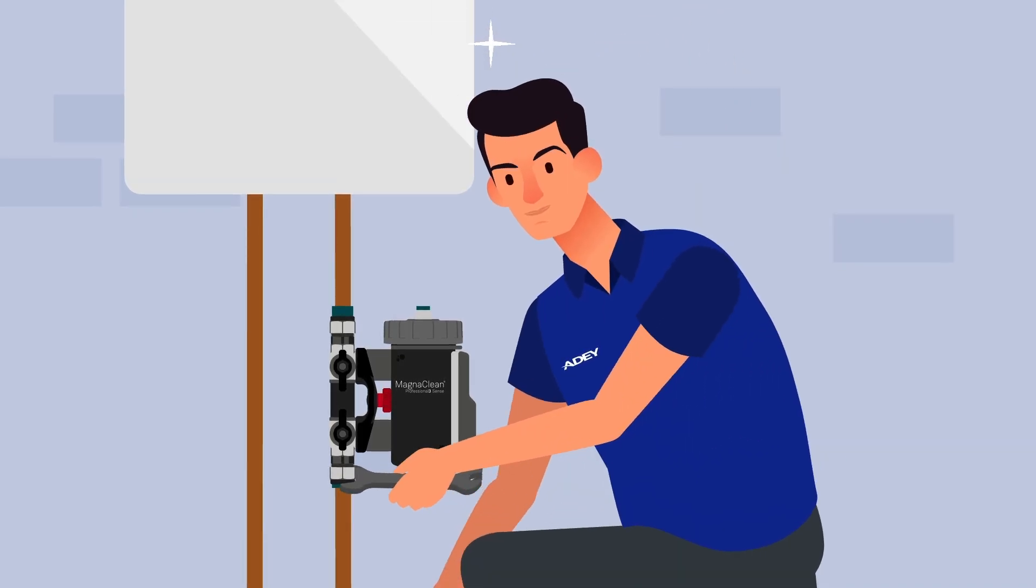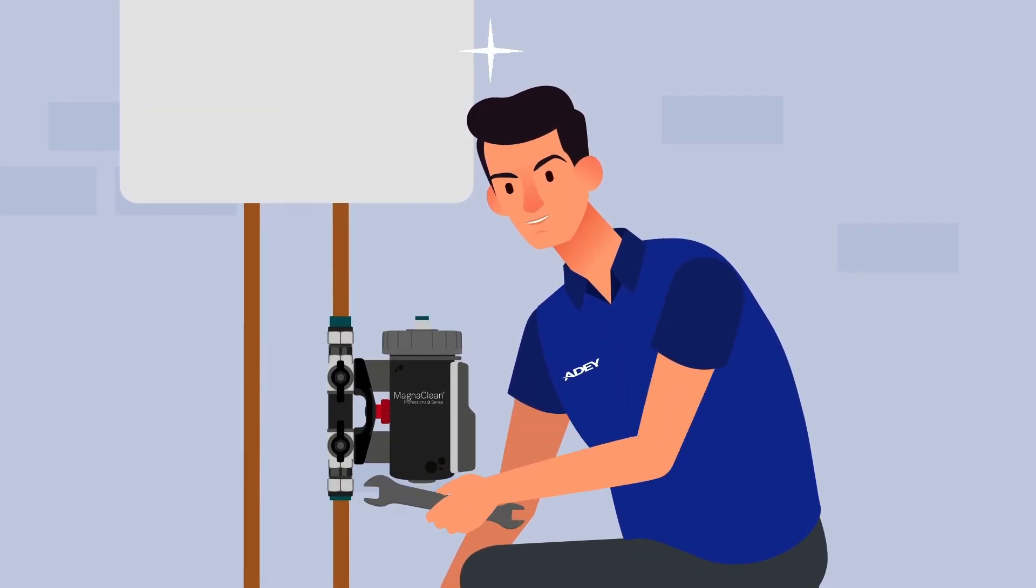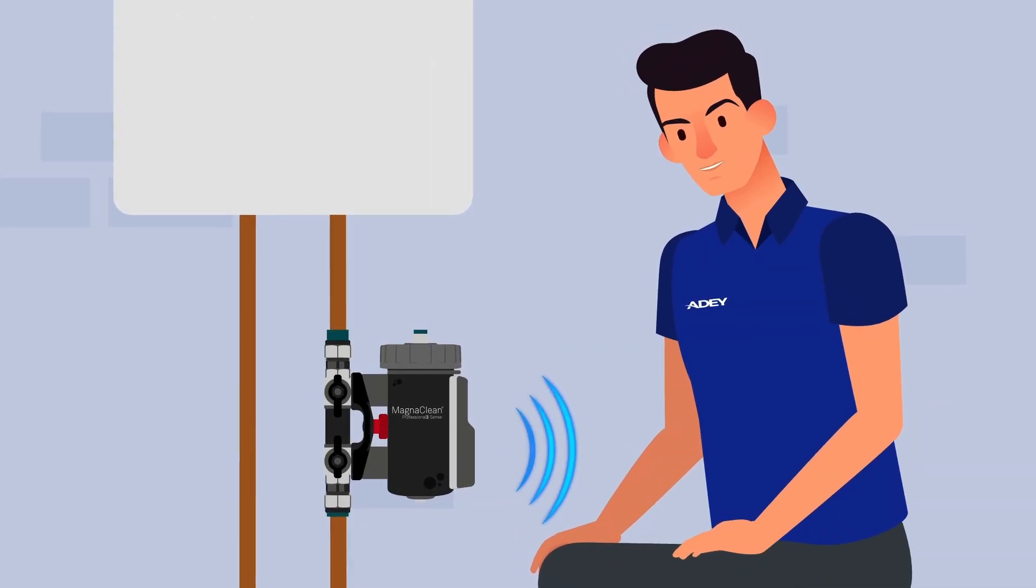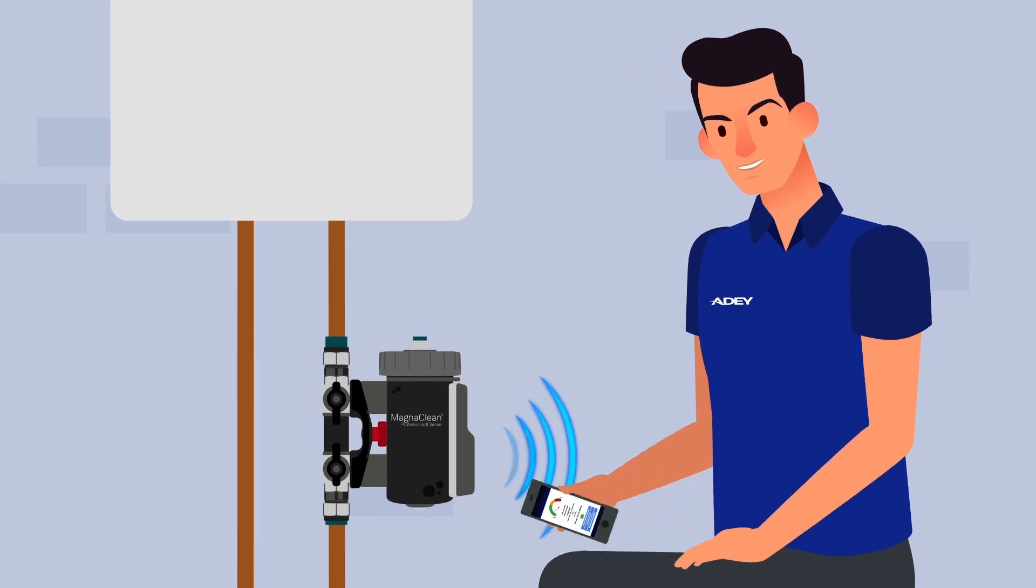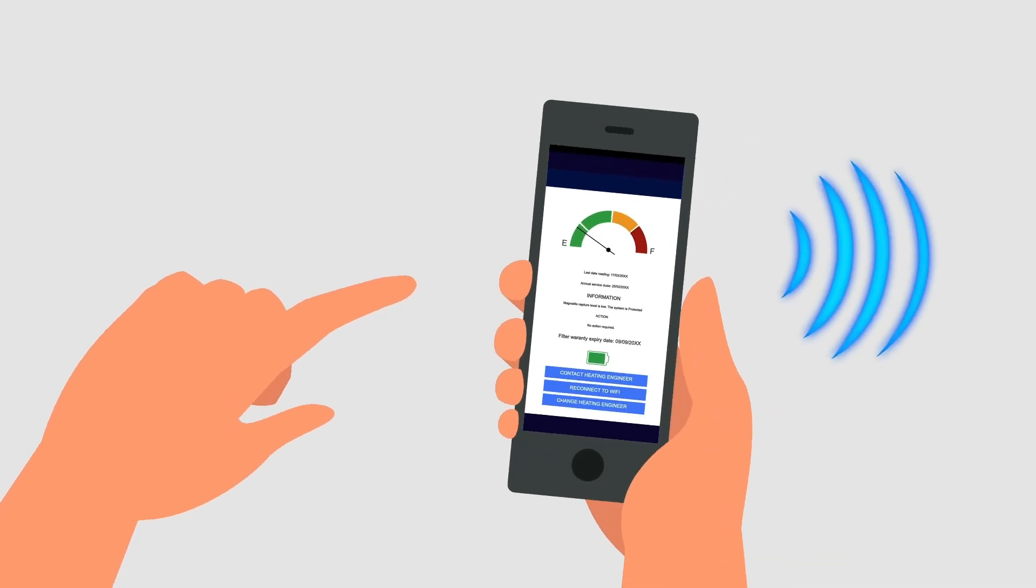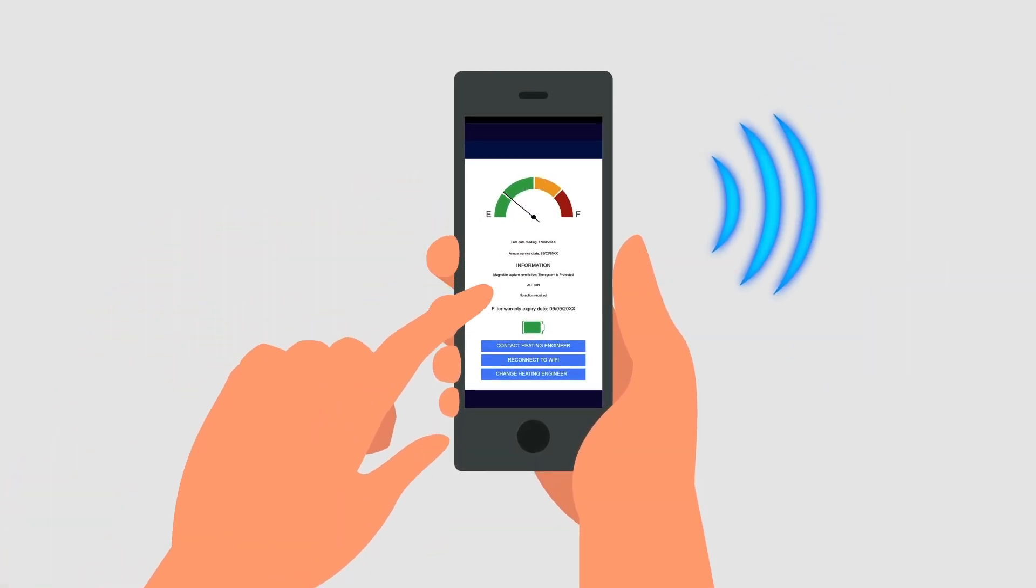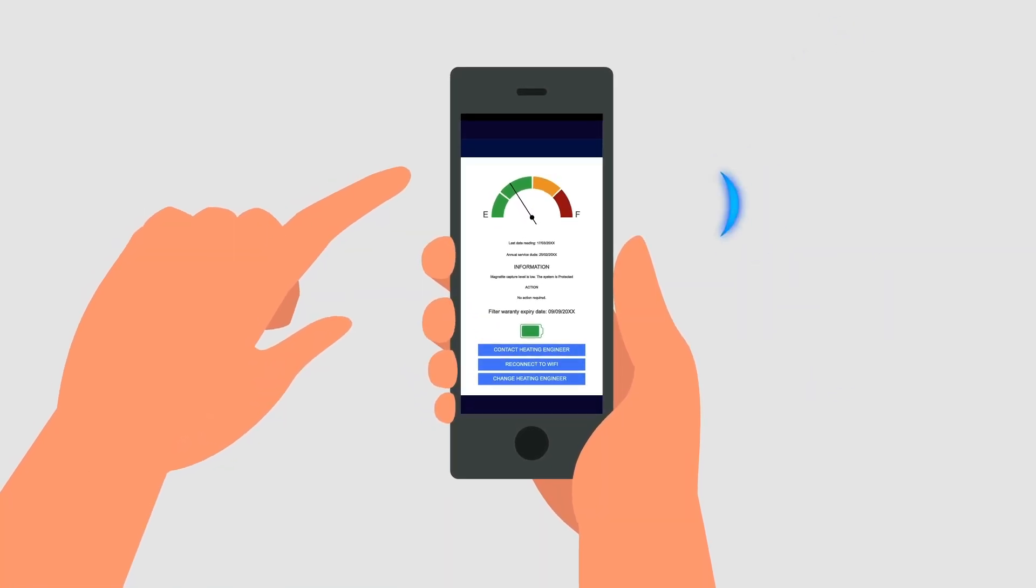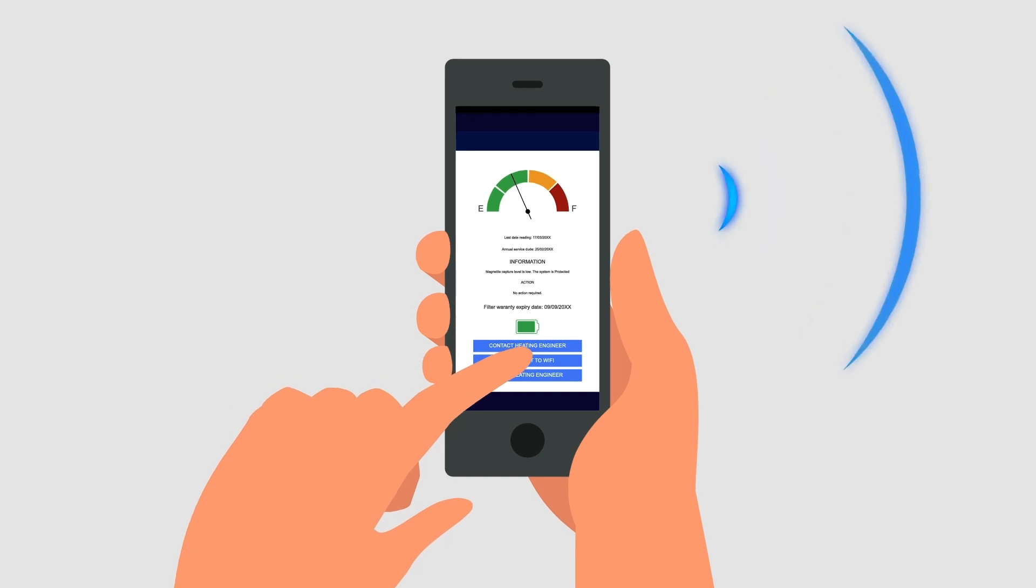By fitting an AD MagnaClean filter, your boiler will be protected all year round from breakdown caused by sludge. And for even further protection, the MagnaClean Professional 3 Sense filter allows your engineer to remotely monitor the level of sludge in your system, protecting your boiler before expensive breakdowns.